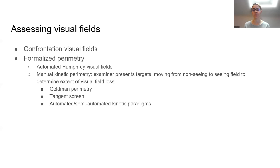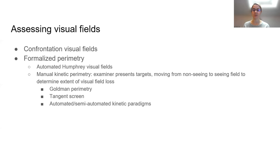We can also use more formal perimetry techniques like Humphrey visual fields, where patients are placed in a machine that presents lights and they indicate when they see a light, allowing us to compare visual field measurements over time with a high level of detail. There are also kinetic visual field tests with standardized equipment, such as the Goldman visual fields, where patients press the button when they see a light but the examiner controls the light, not the machine, allowing a more varied presentation of targets.